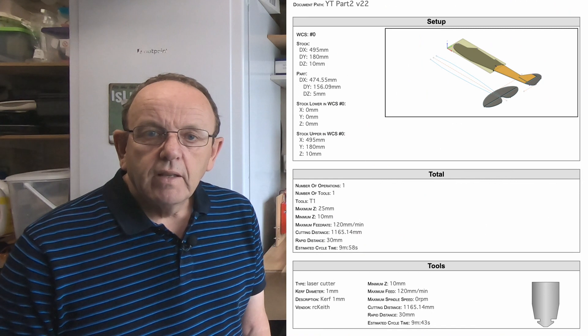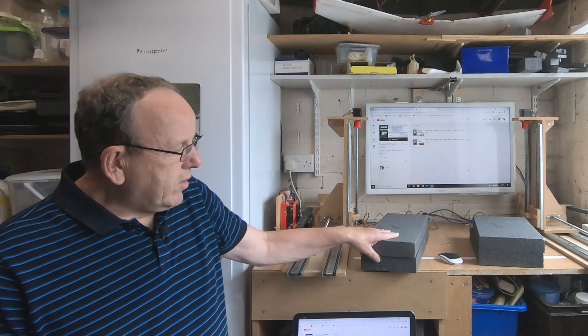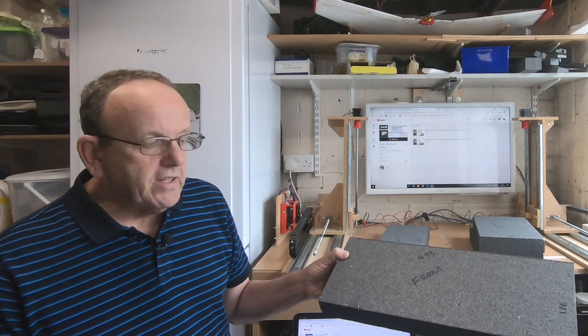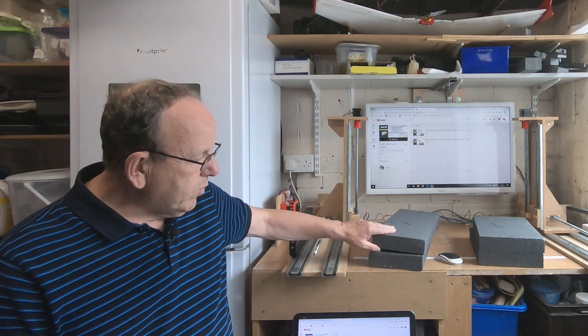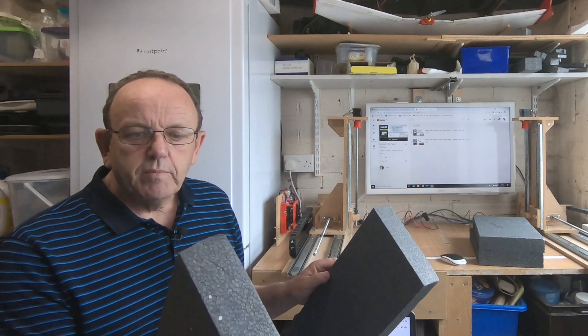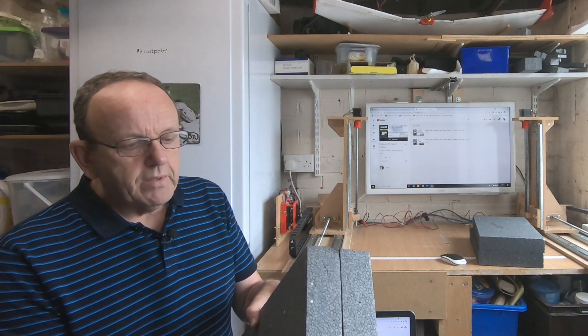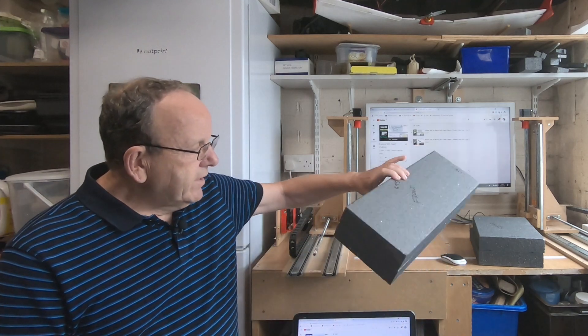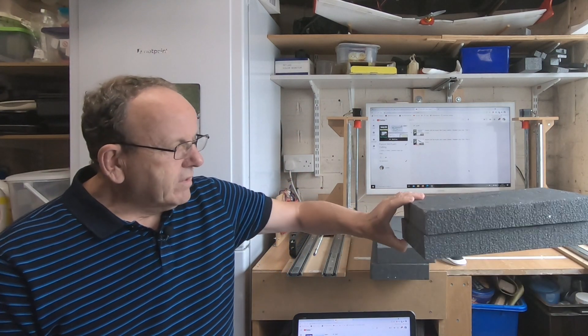In the second video I showed you how we could use setup sheets to get the sizes of the foam we needed. I've already pre-cut the foam blocks to the sizes given in the setup sheets. I've got two blocks, and the plan is to cut them both at once because the fuselage is around 90 millimeters wide. These blocks of foam are only 50 millimeters or about two inches, so I'm going to put two together, hold them with double-sided tape, and the foam cutter is going to cut them both at the same time.